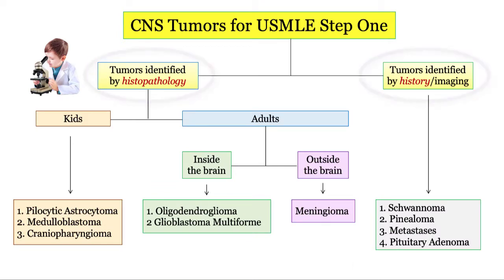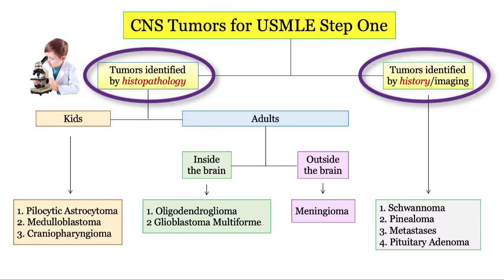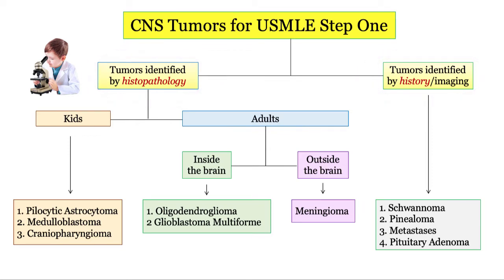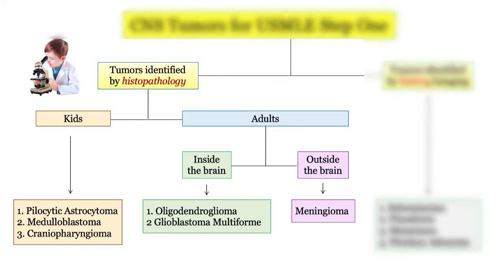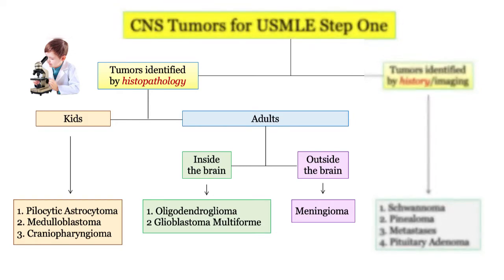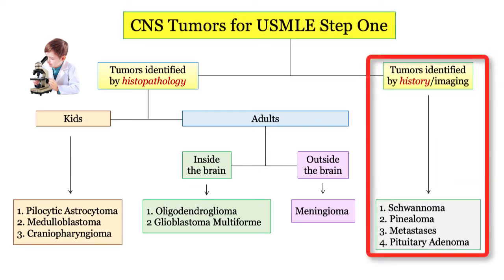For simplicity, we'll break down the tumors into ones identified by histopathology and those which are not. As you can tell from this flowchart, pathology will be key in identifying the type of tumor you're dealing with. The NBME is big on pathology, especially with brain tumors. For the tumors on the right, you'll likely be given a clinical presentation and then asked to identify the tumor.